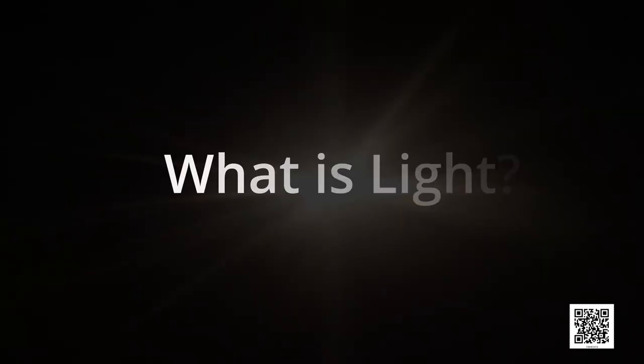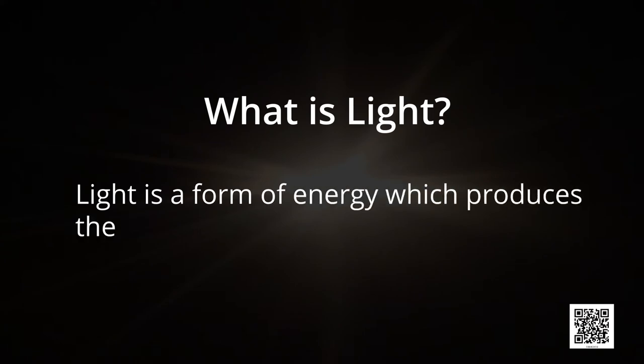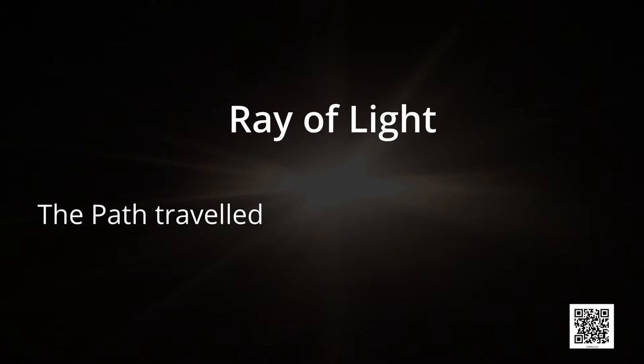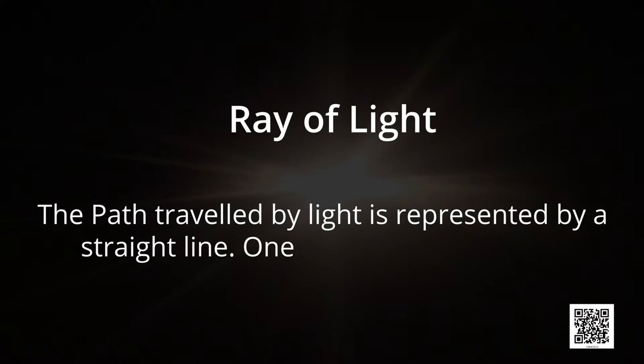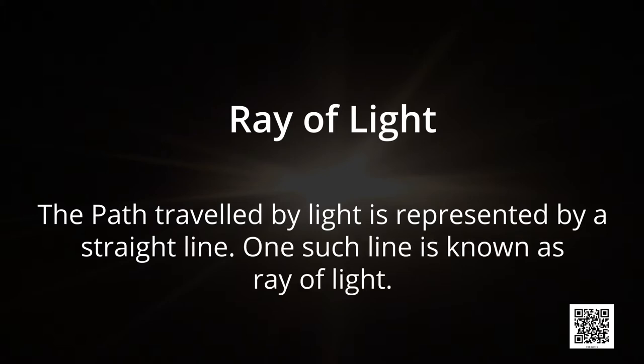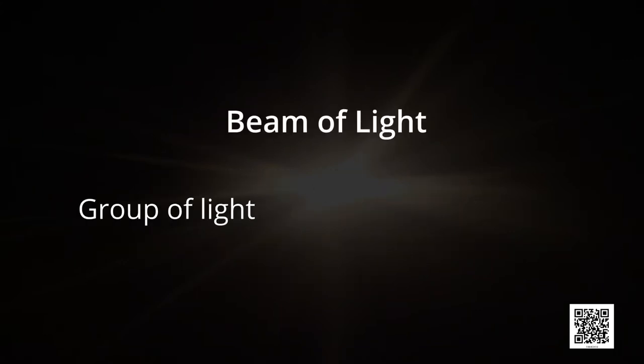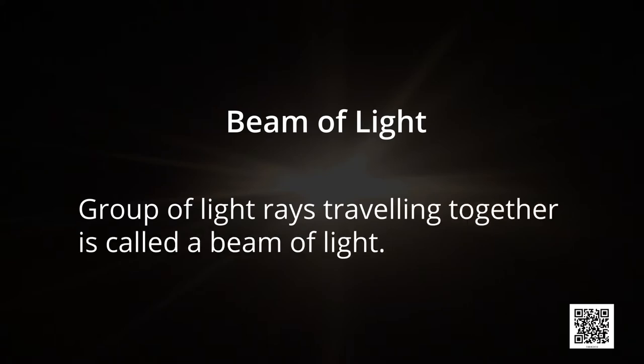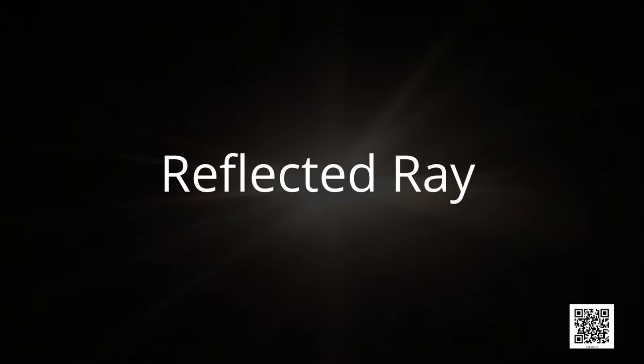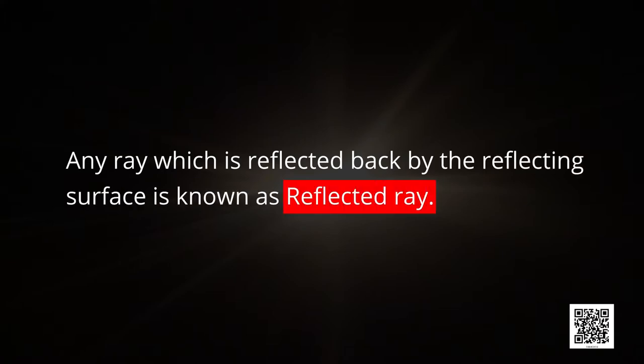But before this it is necessary to understand some important terms. Light is a form of energy which produces the sensation of sight in us. The path travelled by light is represented by a straight line — one such line is known as a ray of light. A group of light rays travelling together is called a beam of light. Any ray which falls on the reflecting surface is known as the incident ray, and any ray which is reflected back by the reflecting surface is known as the reflected ray.